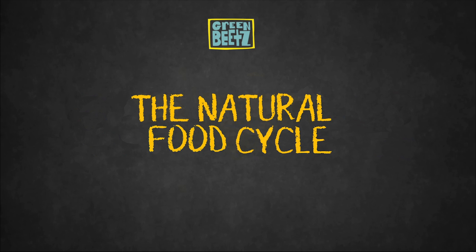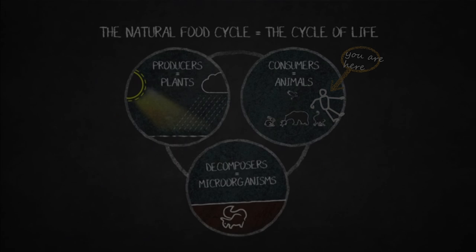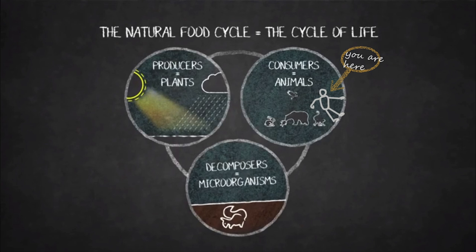Lesson 2: The Natural Food Cycle. Have you ever thought about what your dinner had for dinner? For example, if you eat chicken, that chicken probably ate grains and corn to stay alive and grow. The grains and corn got nutrients from the soil, and their energy from the sun through photosynthesis.